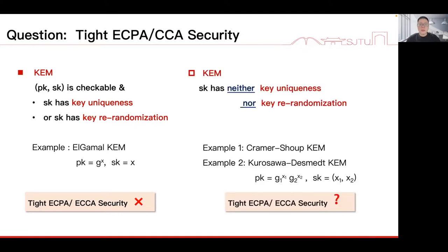However, many well-known KEMs, including the most efficient Cramer-Shoup and Kurosawa-Desmedt KEMs from decisional Diffie-Hellman assumptions, have SK with neither key uniqueness nor key re-randomization. For example, their PK equals g1^x1 times g2^x2. There are many secret keys (x1, x2) corresponding to a single PK. However, it is inefficient to do re-randomization unless the discrete logarithm of g1 and g2 is easy to solve. Therefore, for many well-known KEMs, we do not know whether they have tight enhanced security or not by existing works.